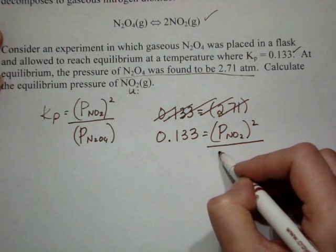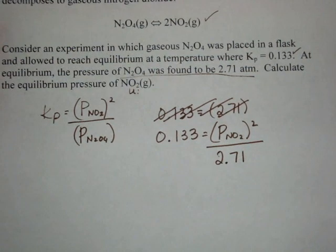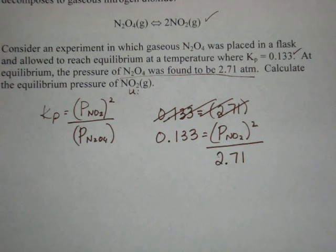So at this point I can just cross multiply. 0.133 times 2.71.